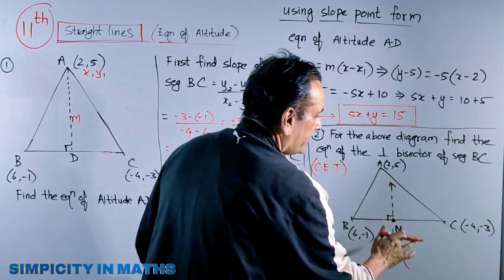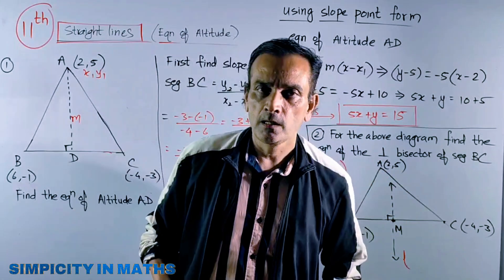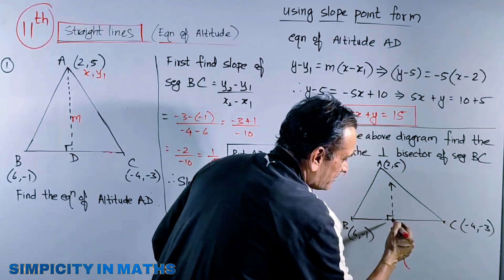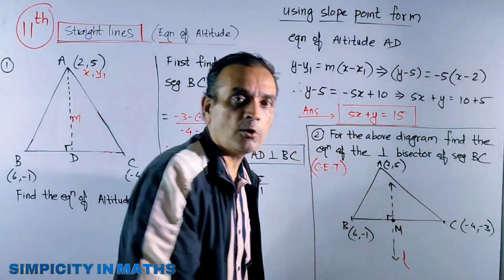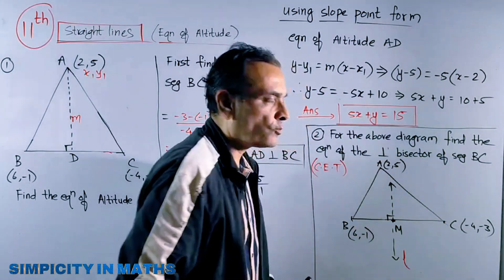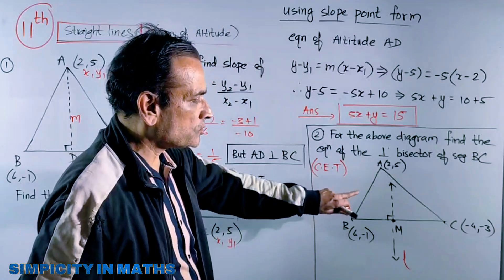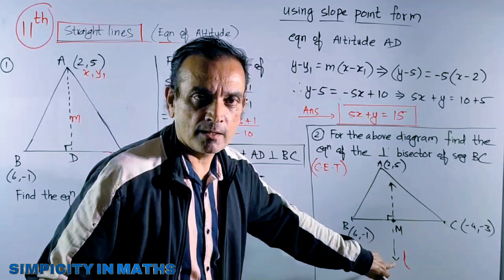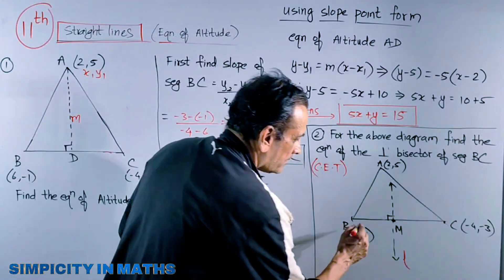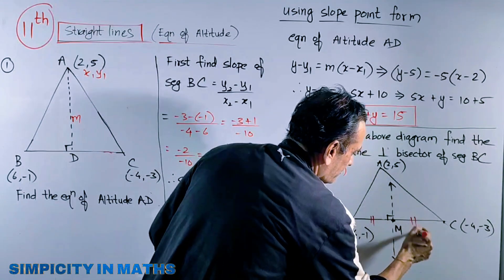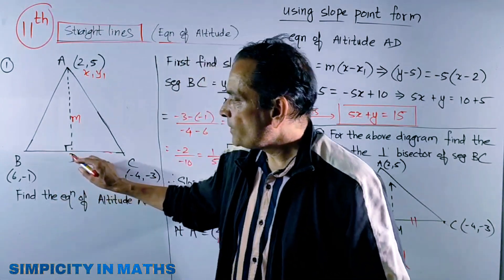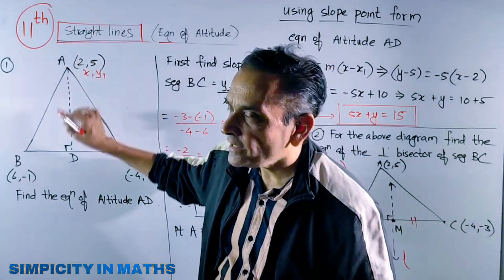Remember: the perpendicular bisector need not pass through point A. It will pass through point A only if triangle ABC is equilateral. Otherwise it passes through the midpoint of BC and is perpendicular to BC. So the diagram is slightly different from the altitude problem.